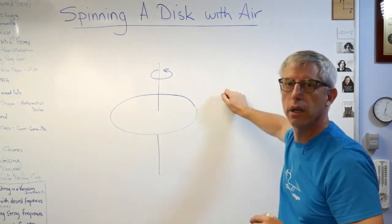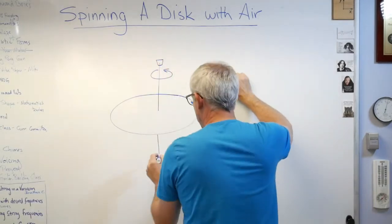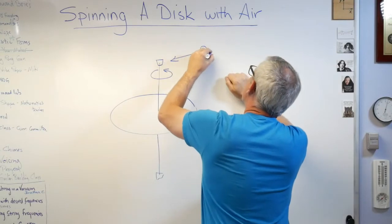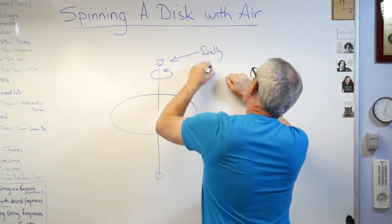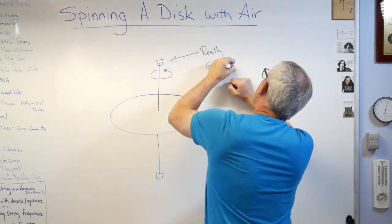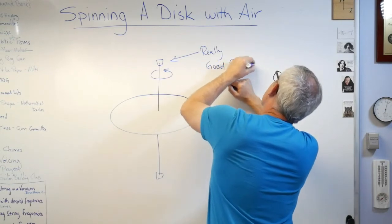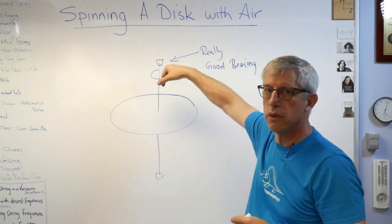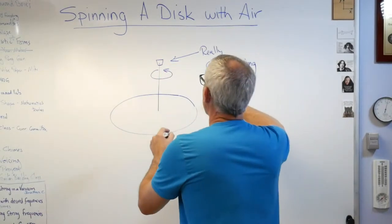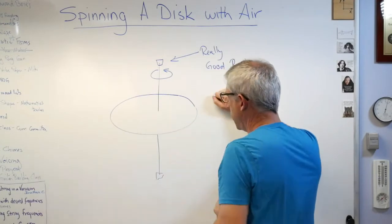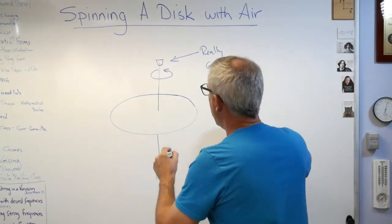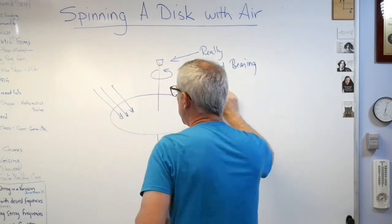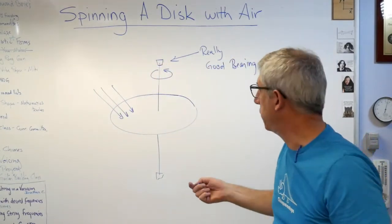This looks like a professor drawing, doesn't it? And the shaft can move. It's got bearings here, really good bearings right there and right down there. So really good bearing there, really good bearing down there, so I can spin this.